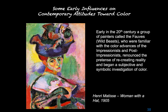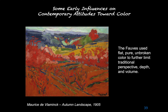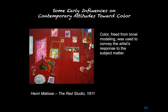Early in the 20th century, a group of painters called the Fauves — meaning 'wild beasts' — familiar with the color advances of the Impressionists and Post-Impressionists, renounced recreating reality and began a subjective and symbolic investigation of color. The Fauves used pure, unbroken color to further limit traditional perspective, depth, and volume. As Matisse said, Fauvism meant 'construction by color.' Color freed from tonal modeling was used to convey the artist's response to subject matter — the means of orchestrating the surface with complex harmonies and dissonances. In The Red Studio, spatially dislocated images are suspended in a color field of red, with the interaction of adjacent colors determining form.